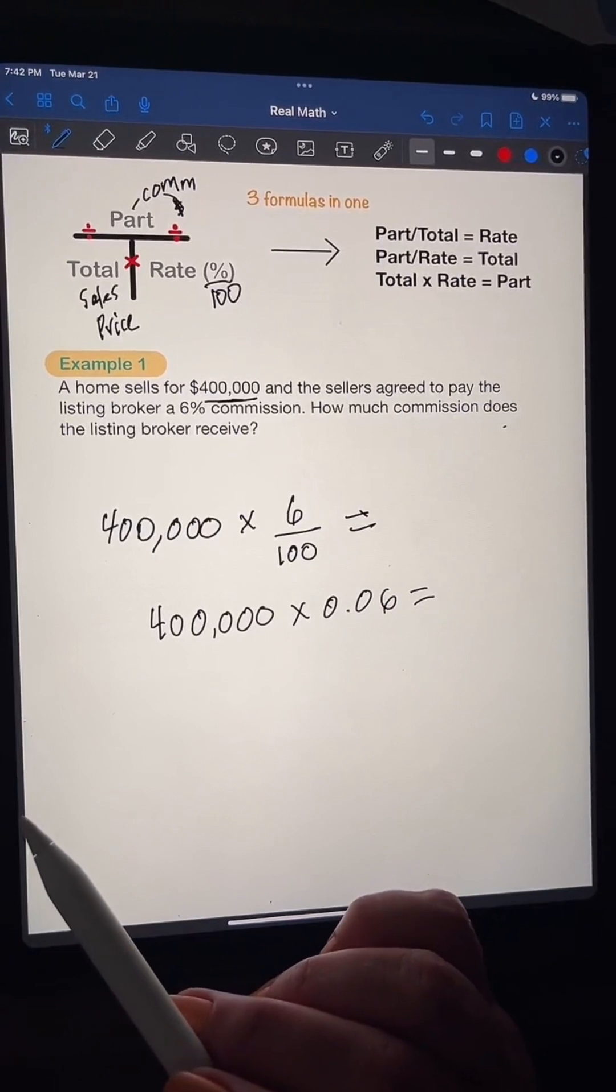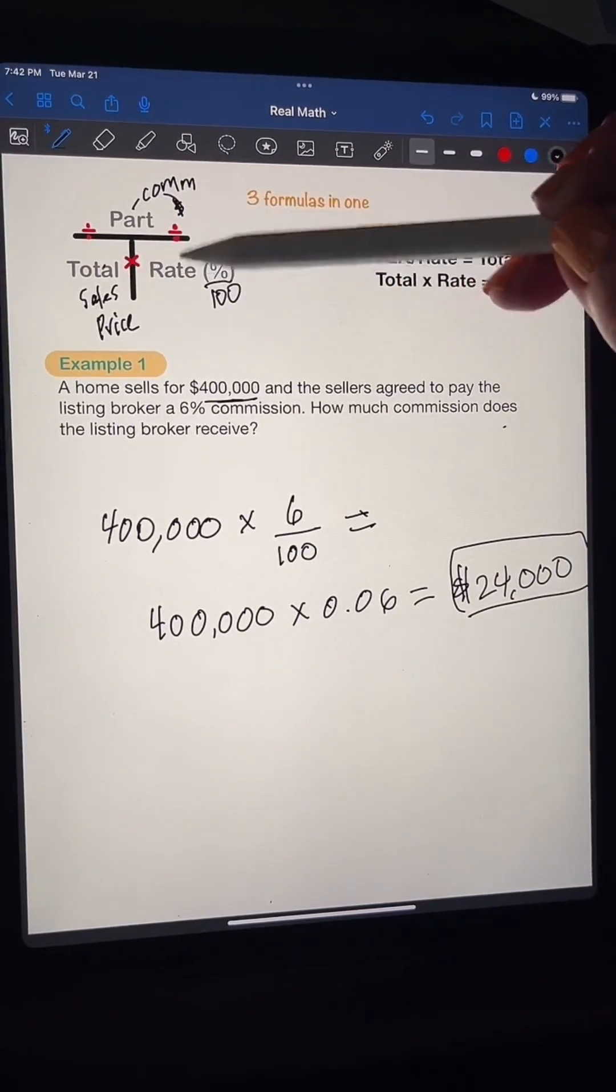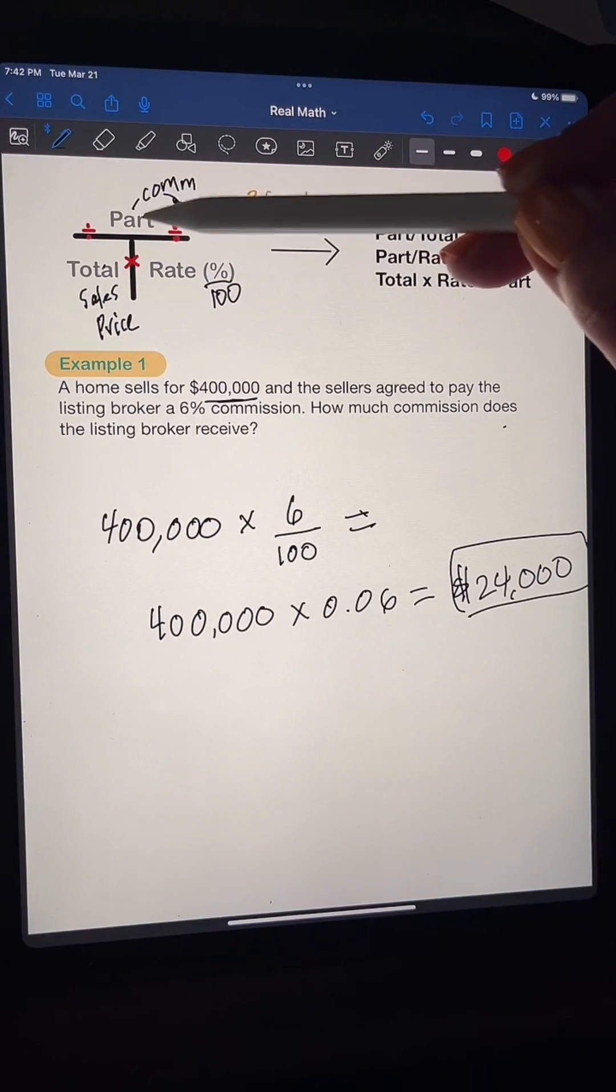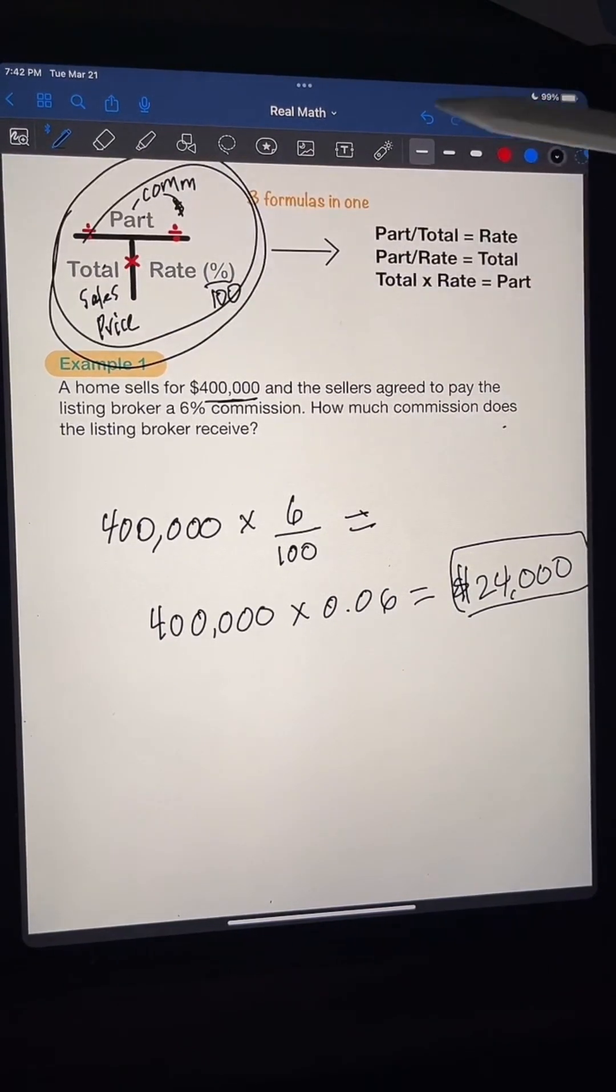So $400,000 times 6%. That's going to equal $24,000. Okay? So that's your answer. So you see how it went here to here and then equals this. All right? So just this is the secret sauce right there. Telling you.